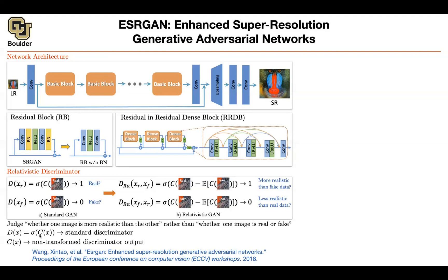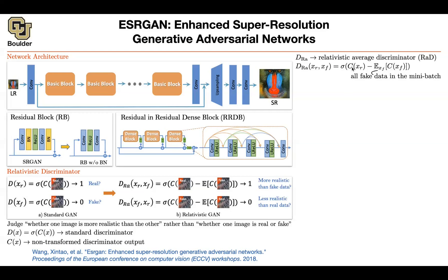C is the standard discriminator output right before the sigmoid, so C ranges from negative infinity to positive infinity. Mathematically, you take a real image, push it through your architecture, stop before the sigmoid, subtract the average of the fake data, and then push it through sigmoid. The discriminator loss says the real image looks more realistic than the fake ones, and the other objective switches the roles of fake and real. The generator then tries to make the discriminator make a mistake.